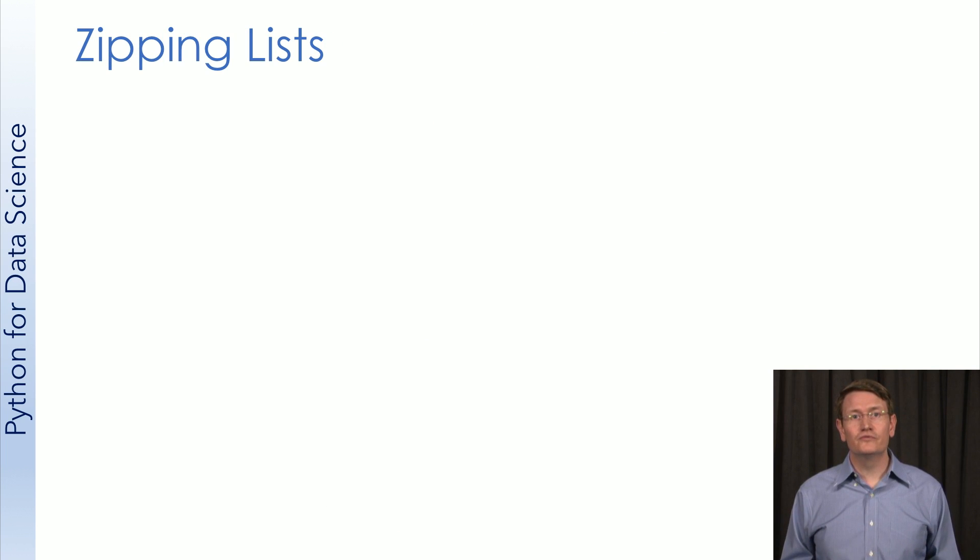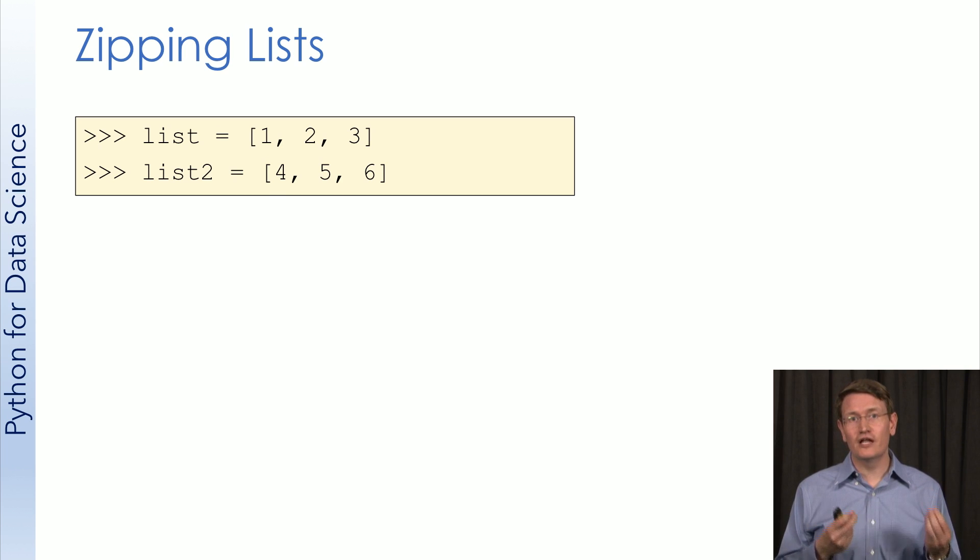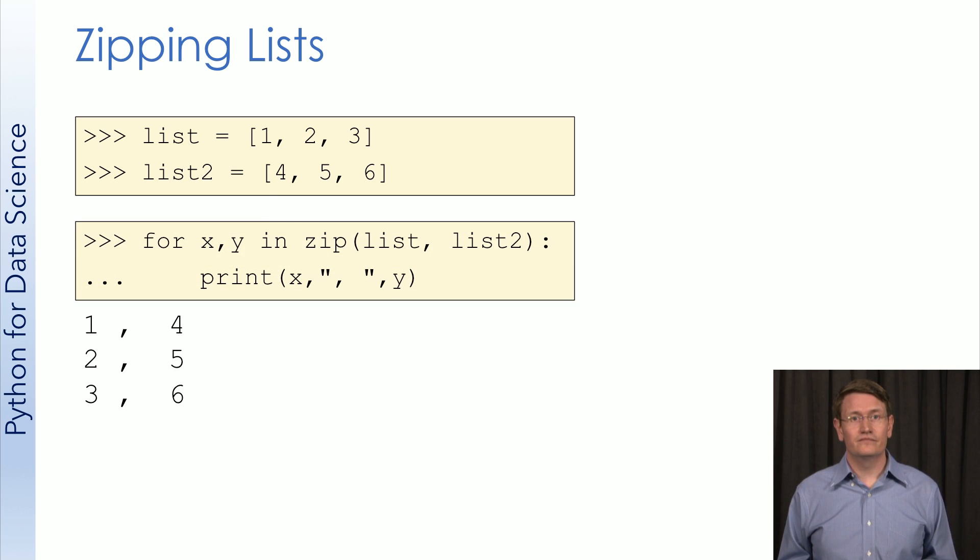Often, you'll be working through two lists at the same time. To do that, you can use the function zip. So, let's create our two lists again. Suppose I want to print the first element in each list, then the second element in each, and so on. To do that, we can do this. When we use zip, that creates a pairing of two lists.